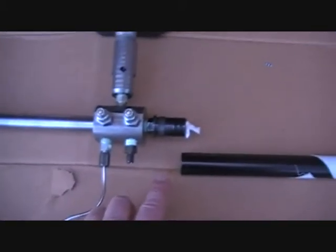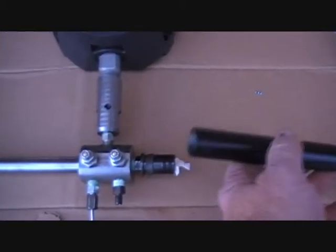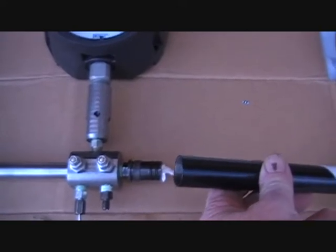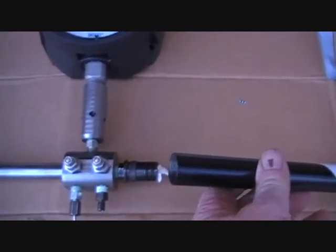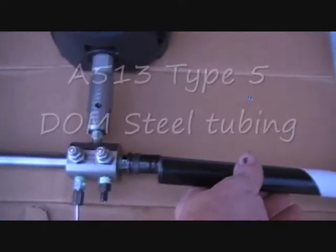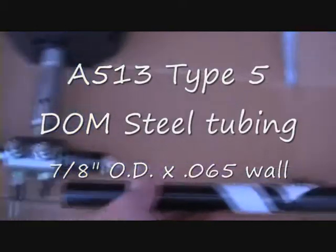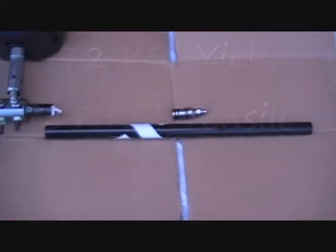The output on this end here, this is actually an adapter for a Crosman Discovery tube. I've got a 7-8 diameter air tube here that is very similar to a Crosman tube, .065 wall. It's 18 inches long.